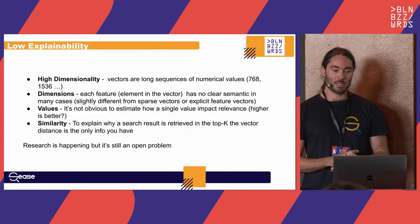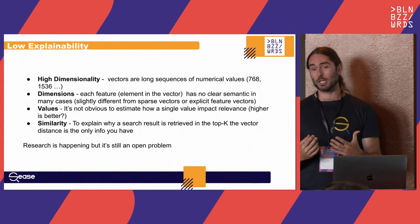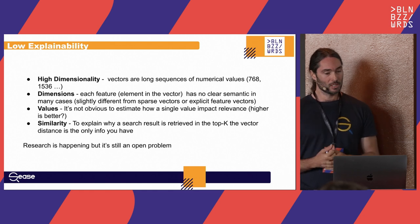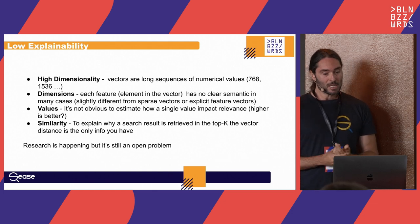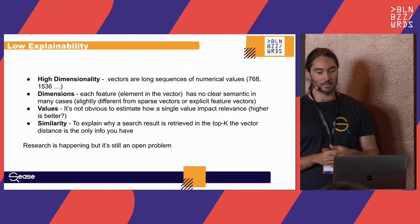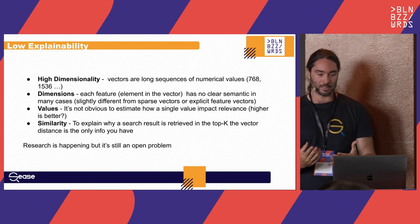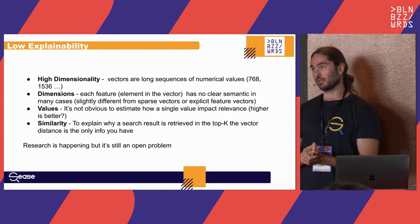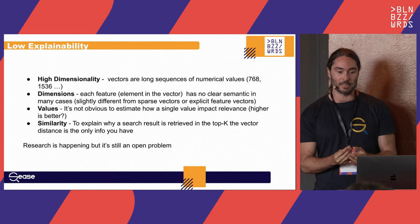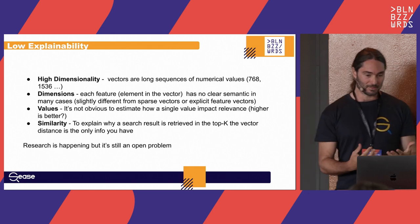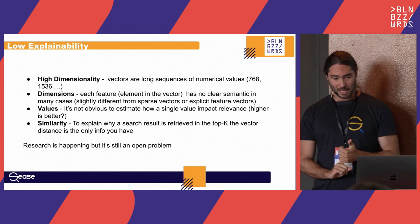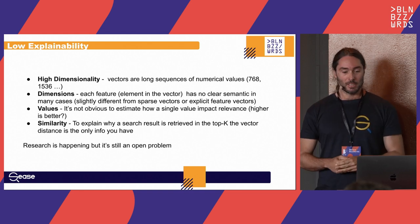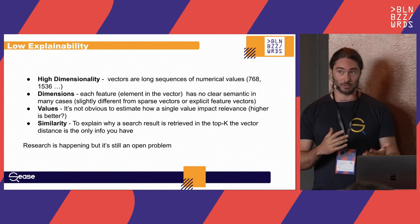What are the problems? The first problem is low explainability. These vectors have high dimensionality — 700 values, 1500 values or more — and each dimension doesn't mean anything specifically. It's just part of the encoding output. It summarizes the semantic behind the text but doesn't mean that the 10th value has a specific human-understandable meaning, and it's not obvious how a single value impacts relevance positively or negatively.